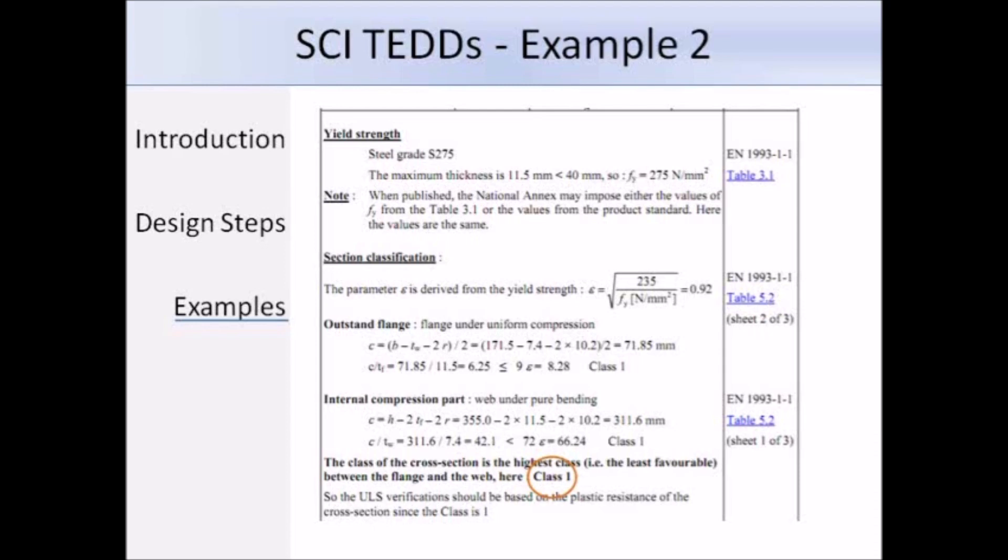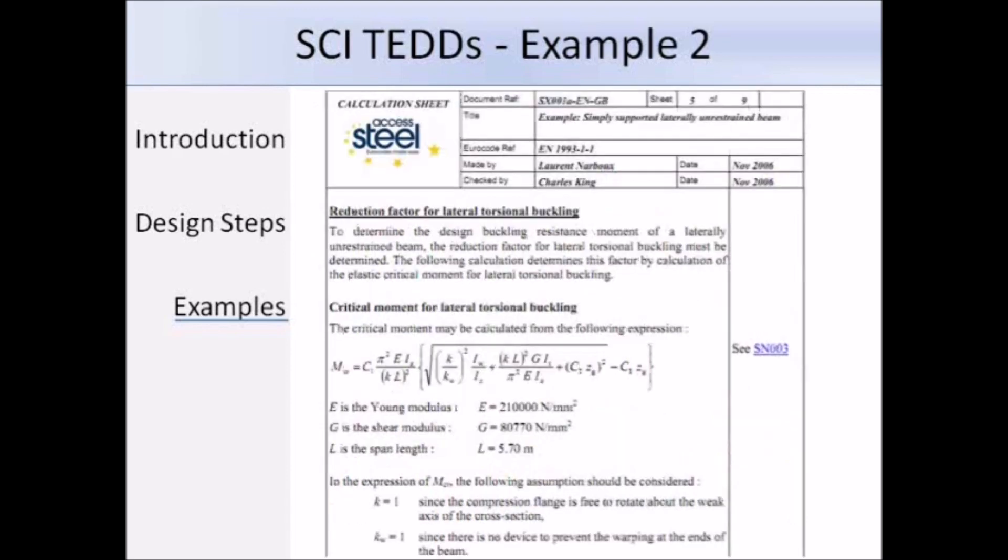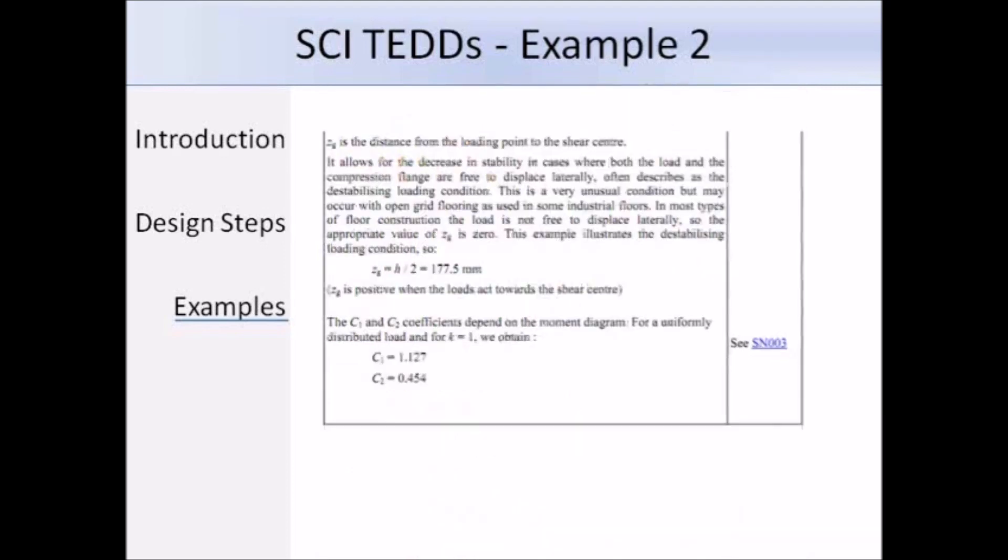The next section is about working out the critical moment, and if you look at the right-hand column, you can see that they're referring to SN003. So the Young's modulus, shear modulus, and the length are listed, and k and kw are set to equal to 1. Zg is the distance from the loading point to the shear centre. In this example, the load is destabilizing, so zg is positive, and the distance is half the height of the beam.